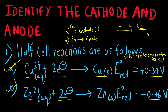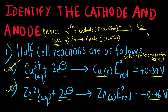At the cathode, what will take place? Reduction. And at the anode? Oxidation. These are the two half-cell reactions of which cell? They are the two half-cell reactions of a Daniel cell. In a Daniel cell, we know that zinc electrode undergoes oxidation and copper undergoes reduction.